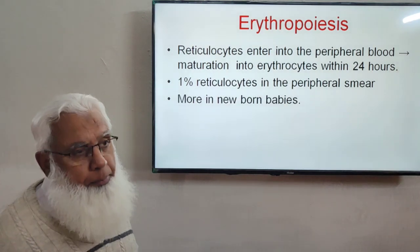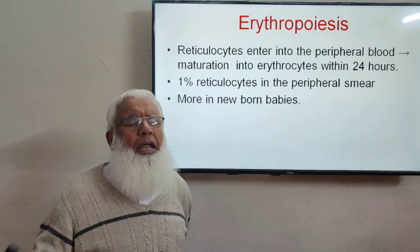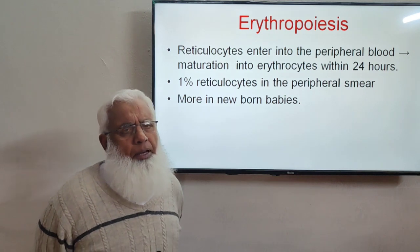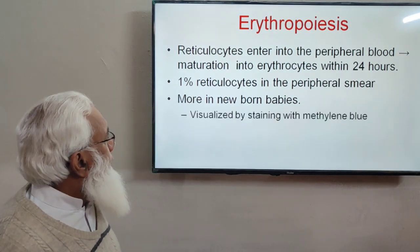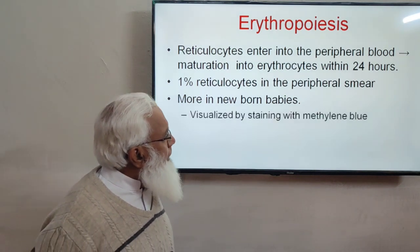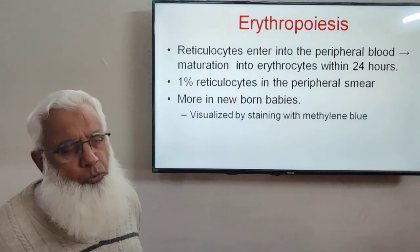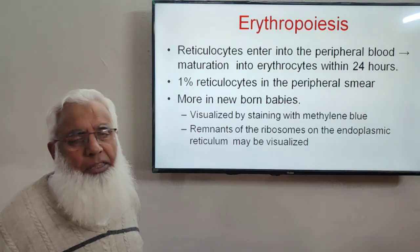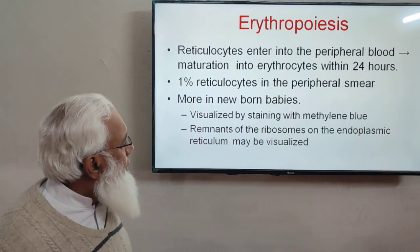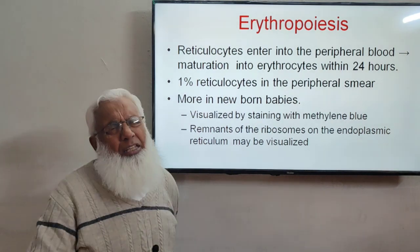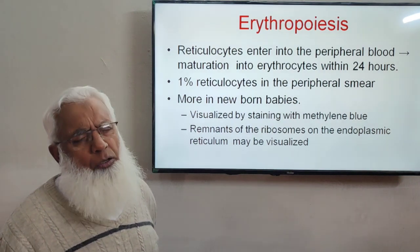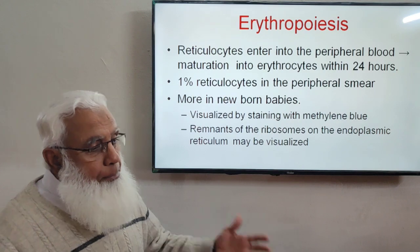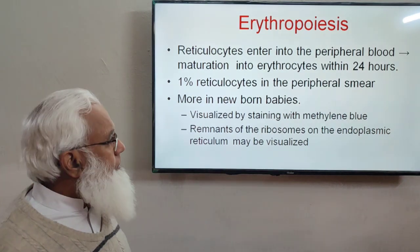There are more reticulocytes in newborn babies because the rate of RBC production is higher. Reticulocytes are visualized by methylene blue staining. The remnants of ribosomes and the endoplasmic reticulum network are visible, which is why they are called reticulocytes — the reticulum network is present.